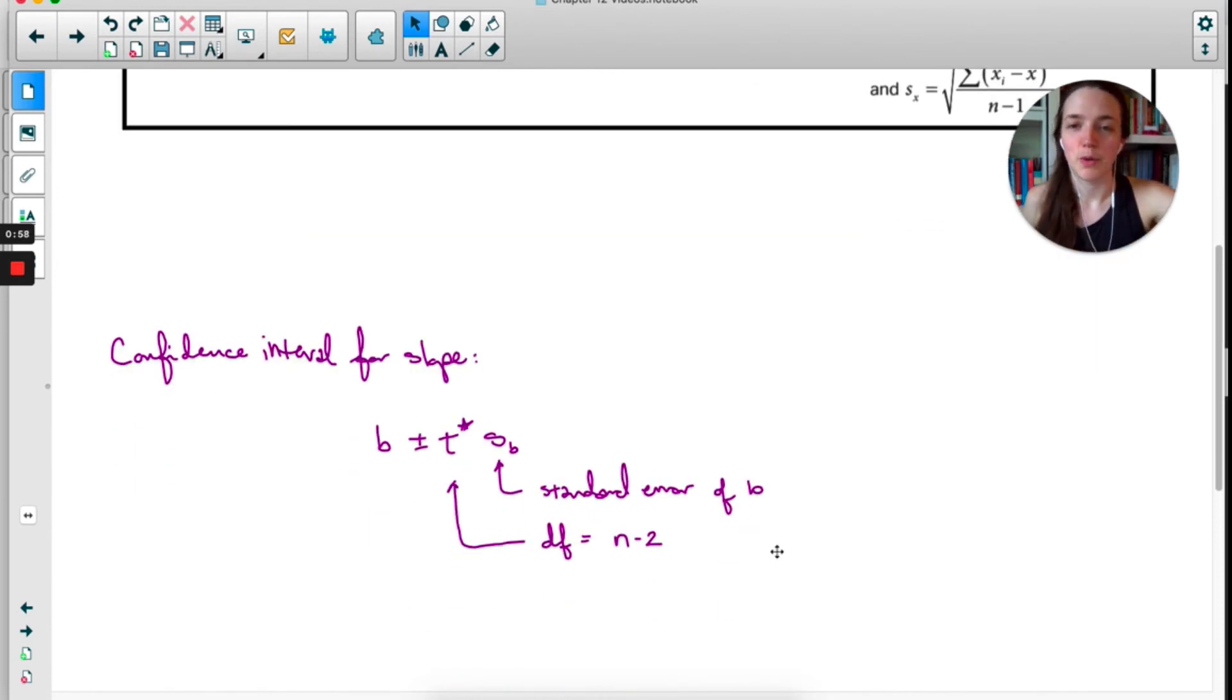Let's get to the actual confidence interval. When you're calculating an interval for slope, your statistic is lowercase b. Always use a t-distribution when doing inference for slope, and then the standard error of the slope. One thing to note is the degrees of freedom here is n-2 instead of n-1. I'll make another video explaining degrees of freedom. The minimum you need to know is you use n-2 when dealing with slope.